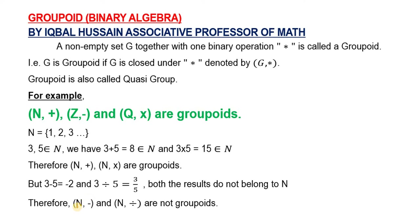If we subtract any two natural numbers, we do not necessarily get a natural number again, hence this does not represent a groupoid. Similarly, if we divide two natural numbers together, this value is not always a natural number, so it is not a groupoid. Here, among the three structures, some are groupoids and some are not.